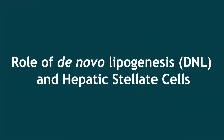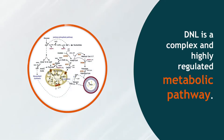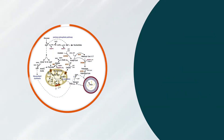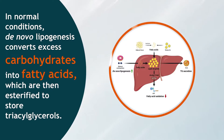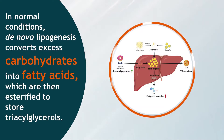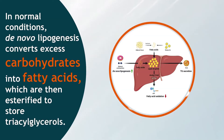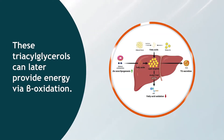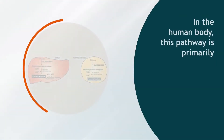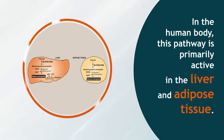In normal conditions, De Novo Lipogenesis converts excess carbohydrates into fatty acids, which are then esterified to store triacylglycerols. These triacylglycerols can later provide energy via beta-oxidation. In the human body, this pathway is primarily active in the liver and adipose tissue.